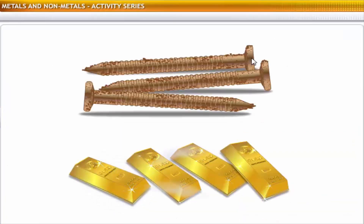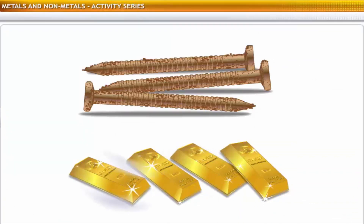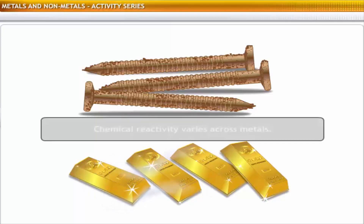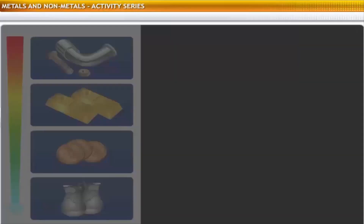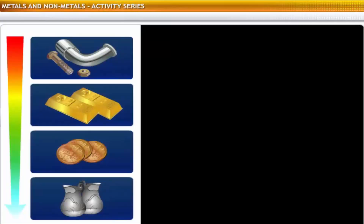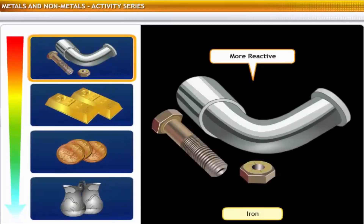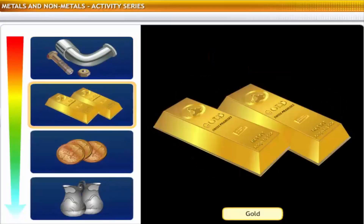Gold never rusts, because unlike iron, it does not react with atmospheric oxygen. This is because chemical reactivity varies across metals. Scientists have arranged metals in a series based on their chemical reactivity.